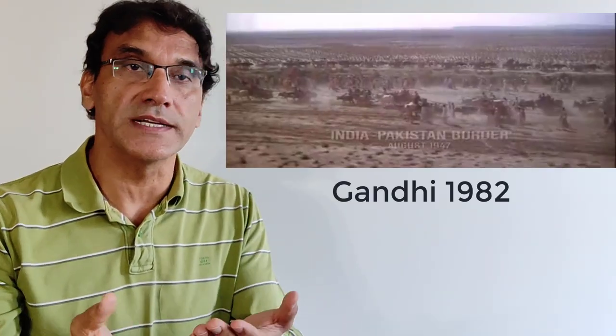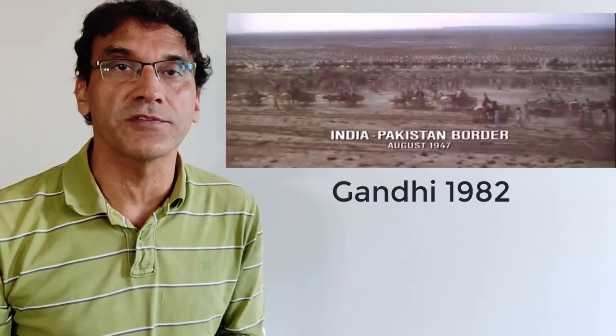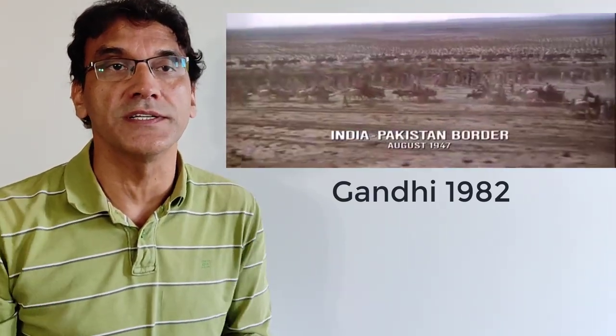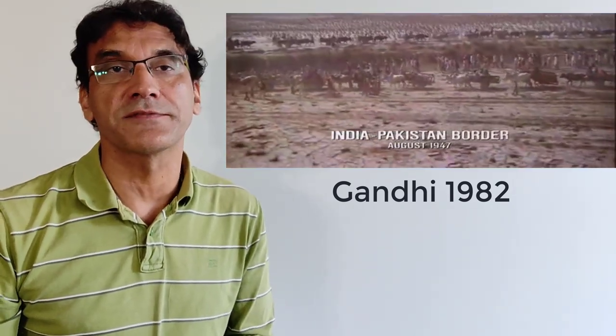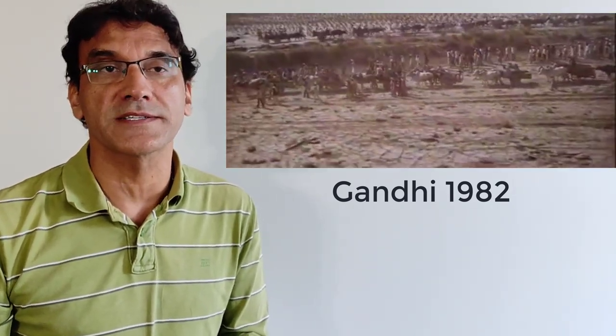Here I would like to show you a clip from the Oscar-winning 1982 film Gandhi. You can see how the scene is realistically and also symbolically picturized — on one side, Hindus and Sikhs are going from Pakistan to India, and on the other side, Muslims from India to Pakistan.